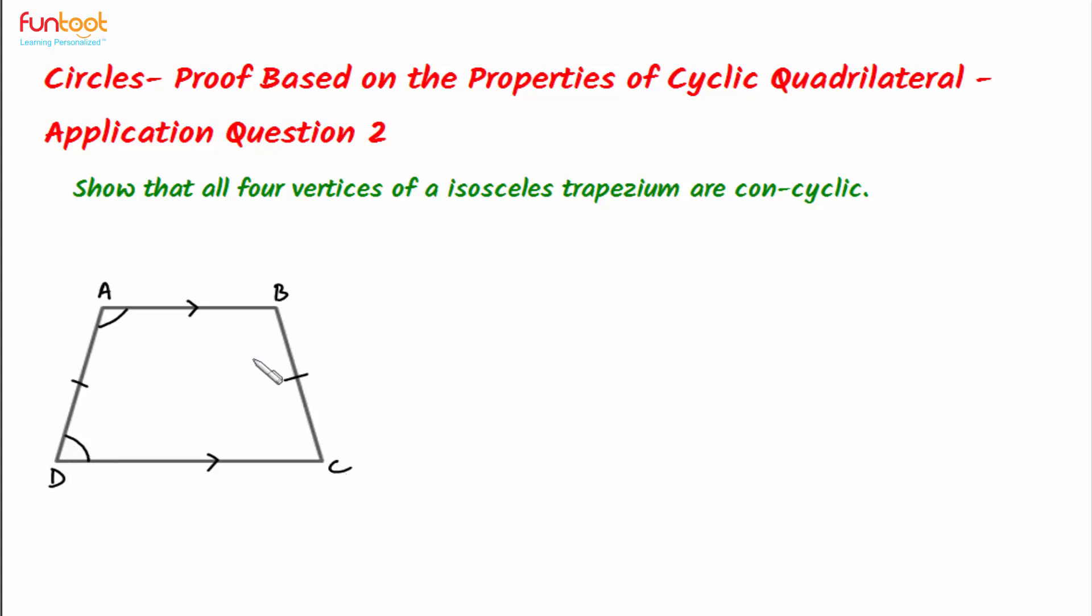For congruency, we need to have two triangles. For having two triangles, we will draw AP perpendicular to CD and BQ perpendicular to CD. Here, AP will be equal to BQ as perpendicular distance between parallel lines is same everywhere.